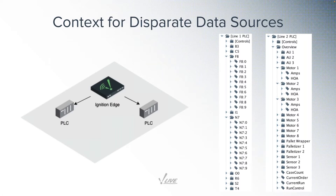Consider this simplified architecture where we have a single Ignition Edge gateway connected to two PLCs controlling two different production lines. One PLC might be something like a SLC 500 with some non-obvious tag names, and the other might be something more modern, like a ControlLogix or Siemens S7. Ignition lets me create user-defined types, or UDTs, that can model any repeatable asset like a motor. Using the tag browser, I can build a cohesive model with proper tag names that better reflects my manufacturing process, possibly using a standard like ISA-95.